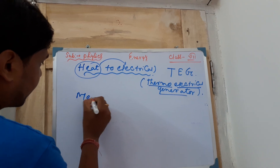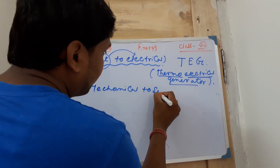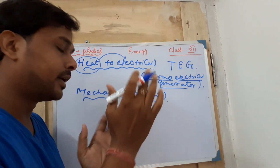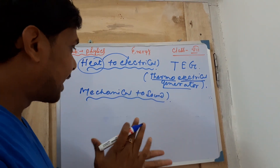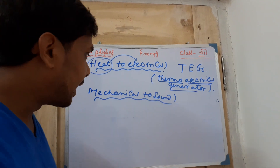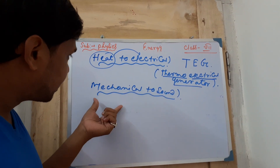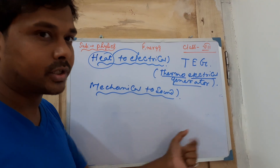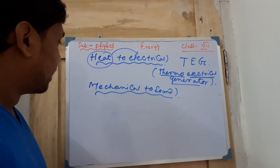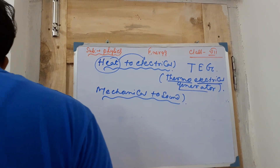Next is mechanical to sound energy. If you just clap your hands, you are performing a mechanical action, and from that mechanical action you produce sound energy — you can hear the sound of the clap. So clapping your hands is an example of mechanical energy being converted to sound energy.